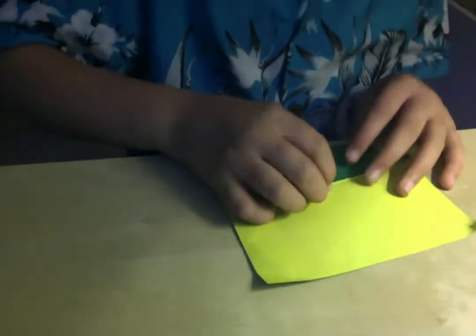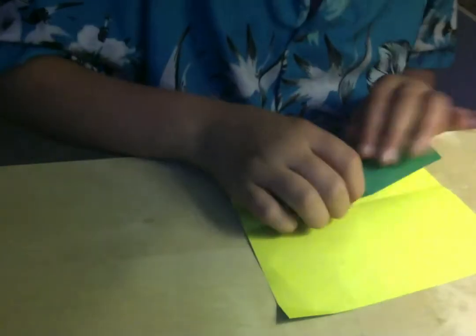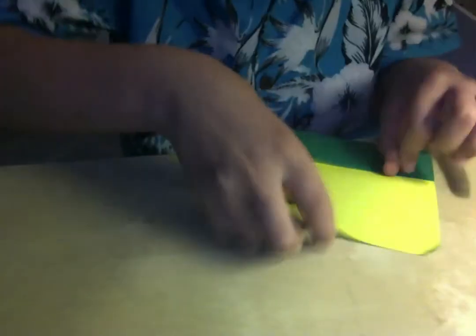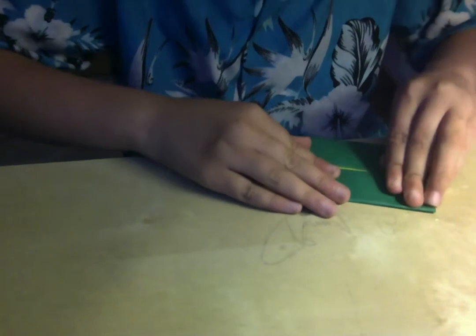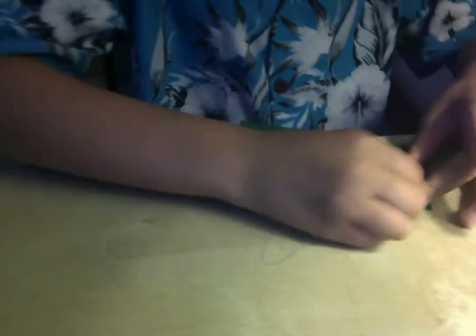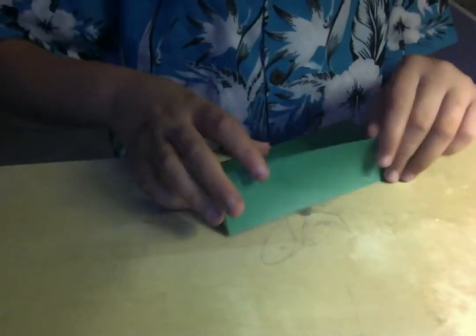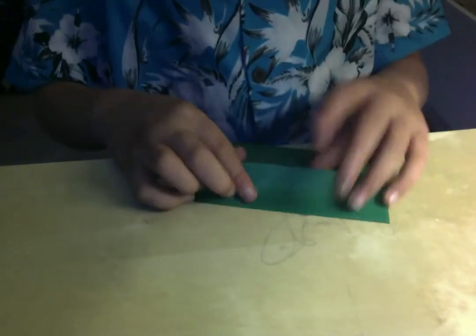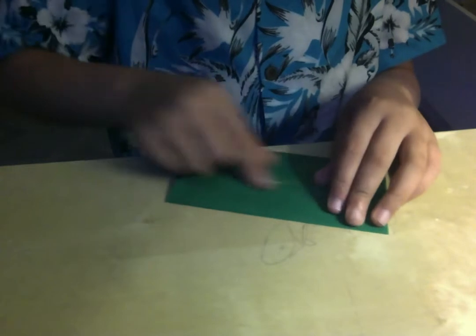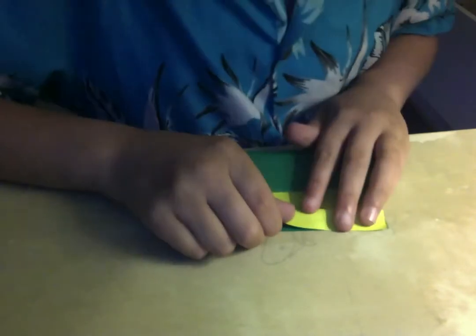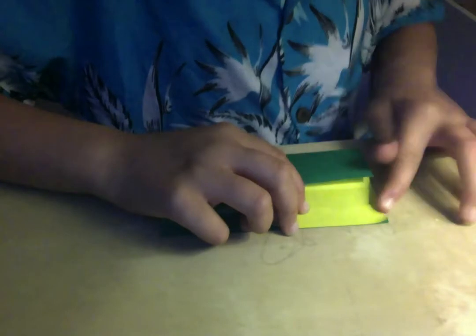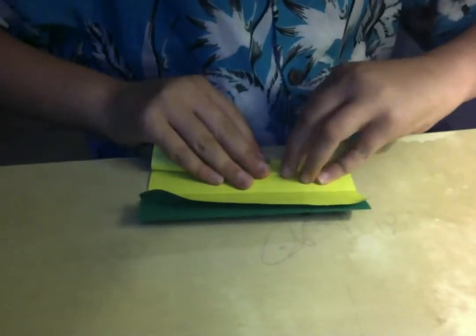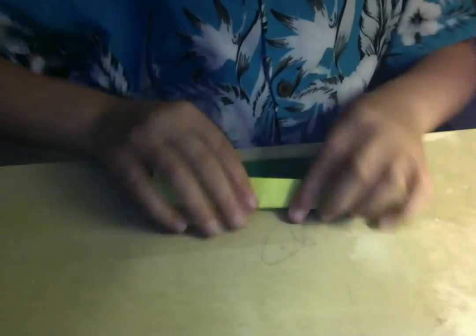This is a box pleat model. So first we're going to fold it into 16ths in both directions. I don't normally do it in both directions, but I'm just going to do that because it will be a little bit easier to teach this way. So fold this edge to the edge. And repeat. Turn it over.